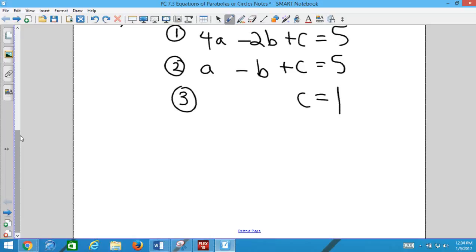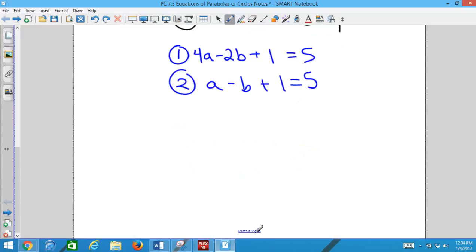Eliminate one of the variables. Well, I know what c is already. Let's do this. There's a couple different ways we could do it. We know what c is. Let's just plug in c into one and two. Just plug it in. Equation one, 4a - 2b + 1 = 5. And equation two, a - b + 1 = 5.